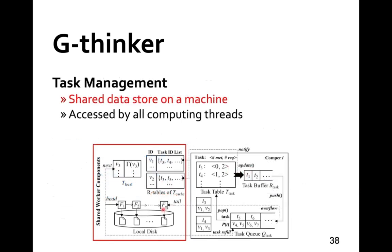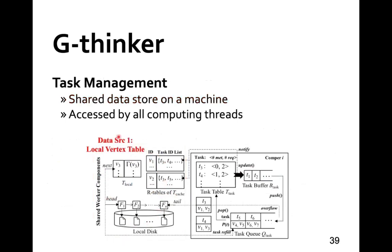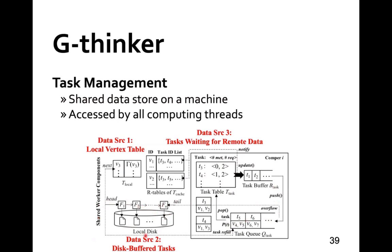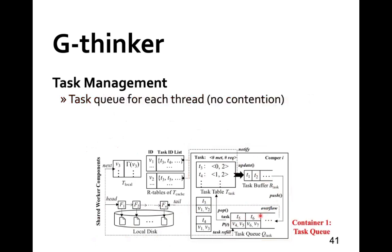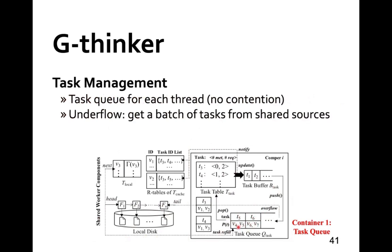Looking at G-Synker's task management: components shared by all computing threads in a machine include the local vertex table and a list of task files spilled from task queues, both of which are sources of tasks to be refilled into task queues. Each computing thread also has a set of tasks waiting for requested data to arrive. We prioritize refilling from task files first, as these tasks have been partially processed, to finish pending tasks earlier than spawning new ones, minimizing the number of disk-spilled tasks.